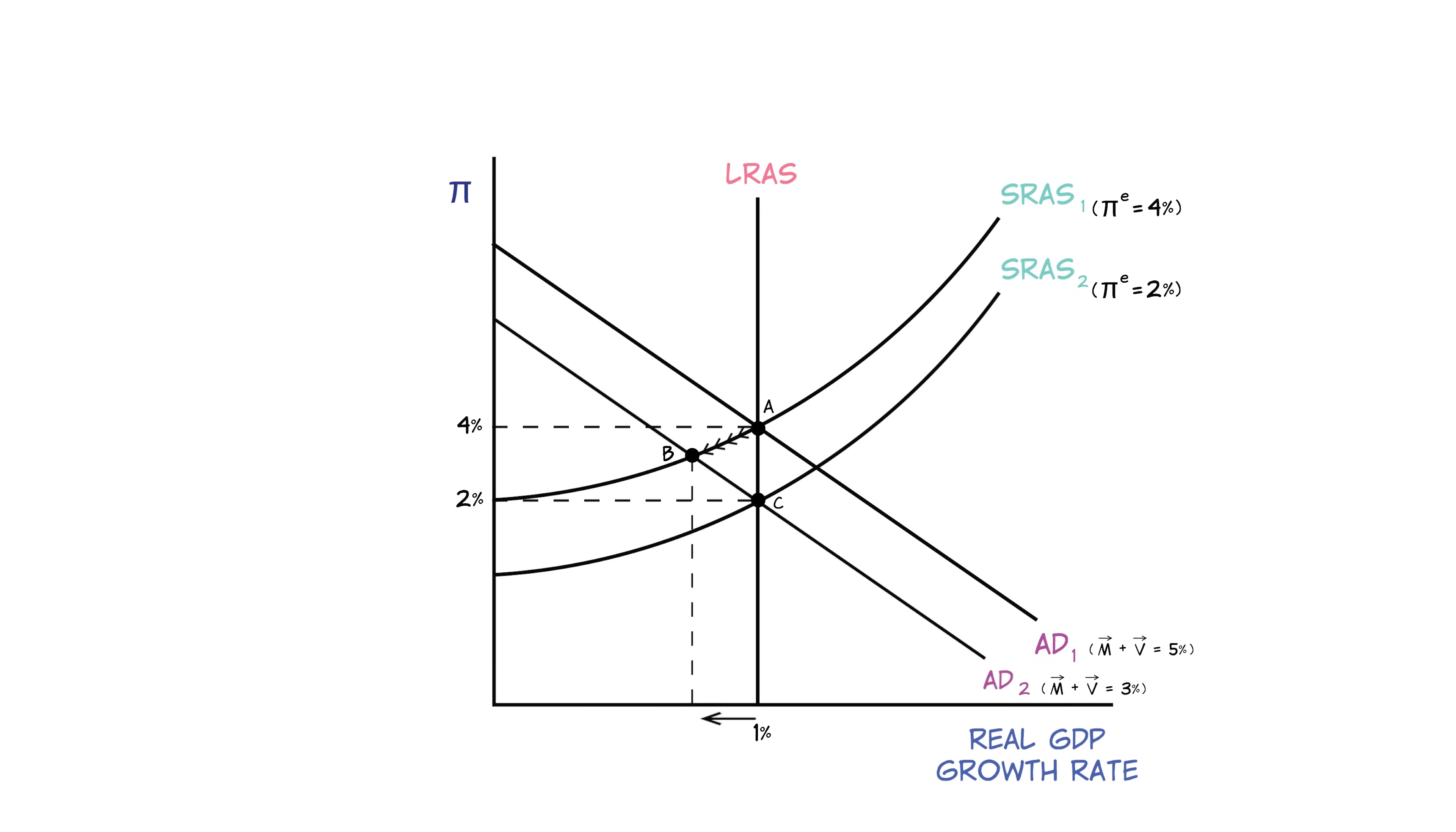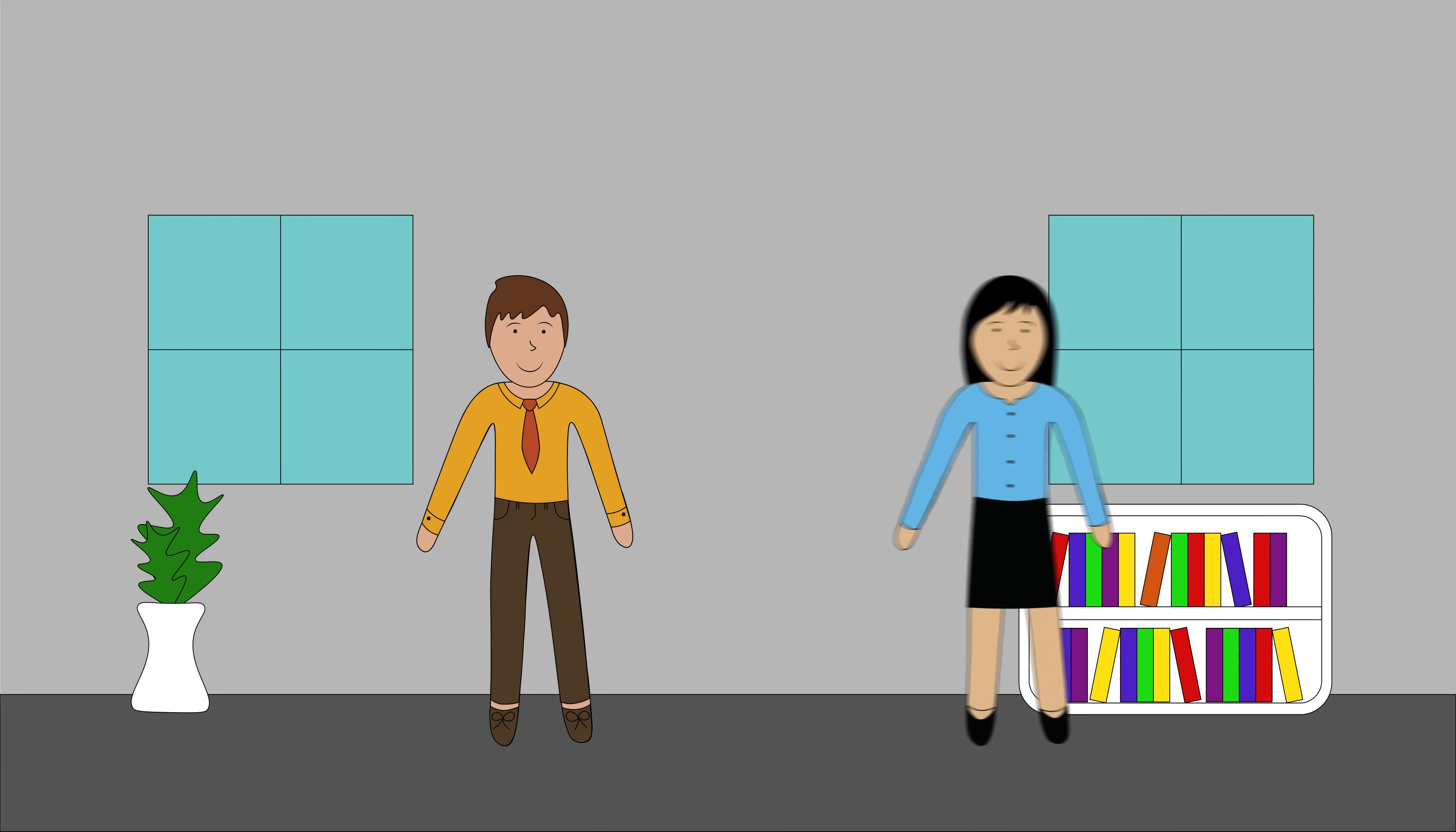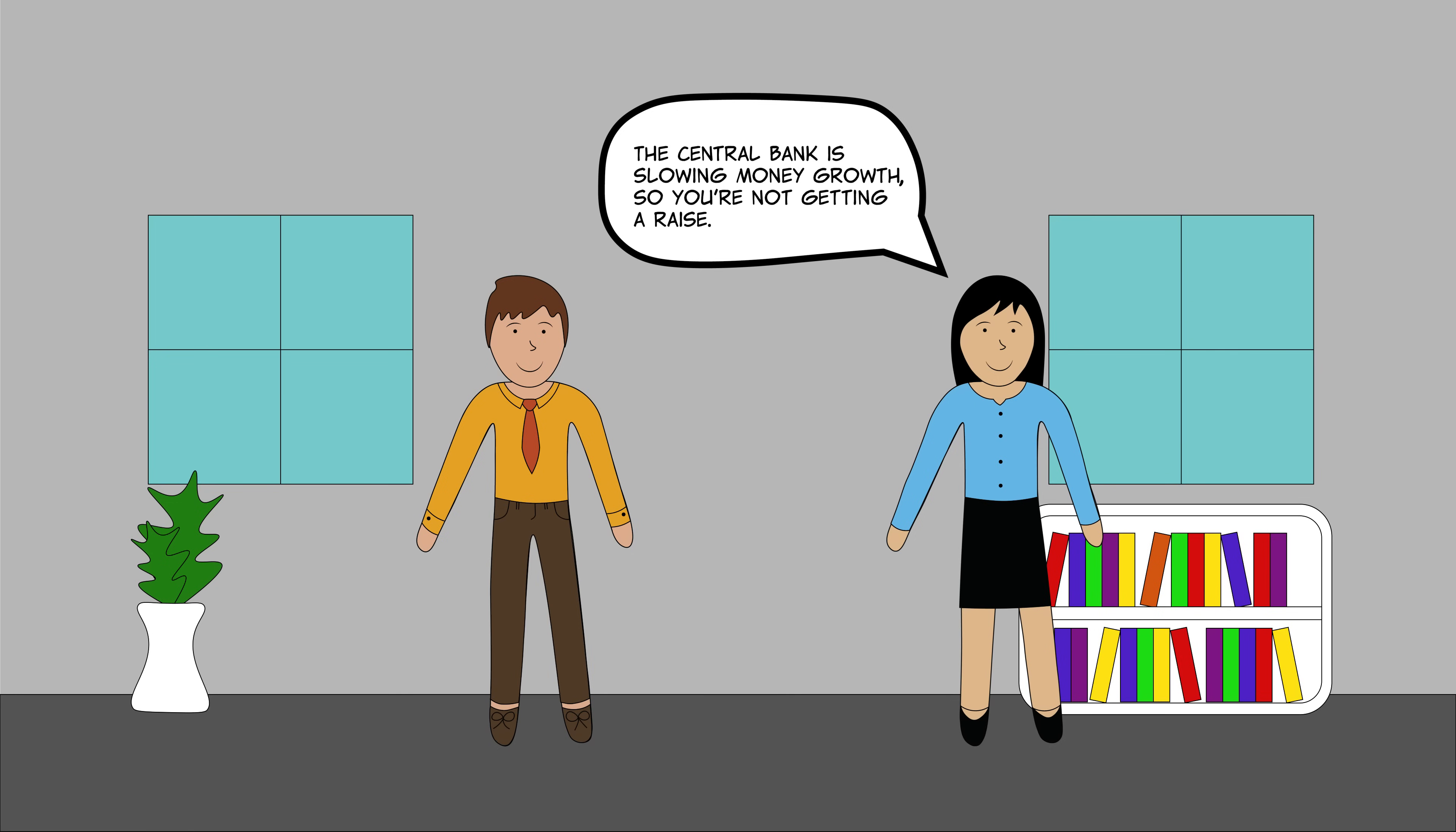Because prices and wages are sticky. Imagine that your boss came into your office one day and just says, hey, the central bank is slowing money growth, so you won't be getting a raise this year. You'd probably be pretty upset. Even if your boss told you that since prices will also be lower, you won't be worse off.